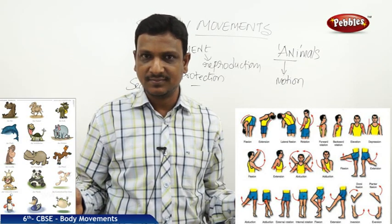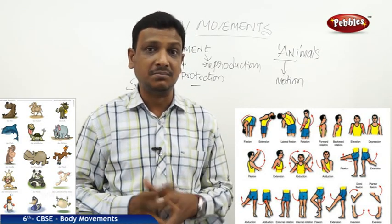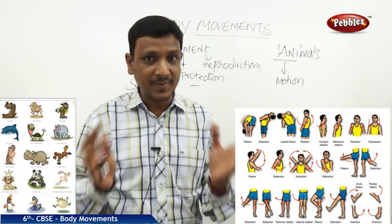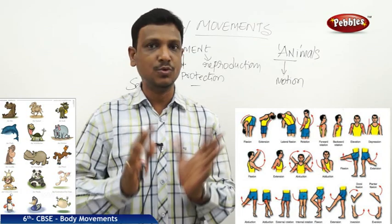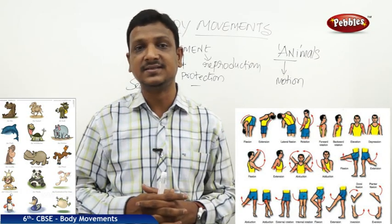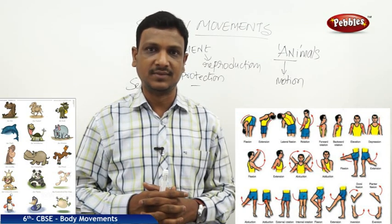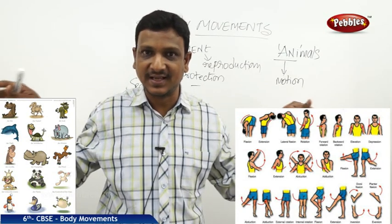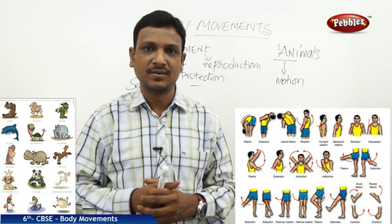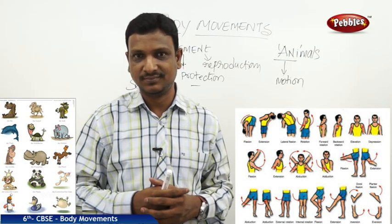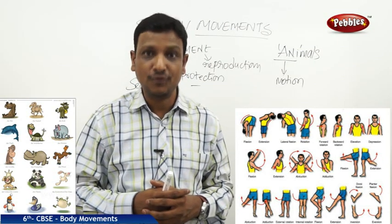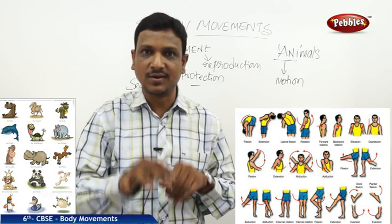All animals move from place to place by different means of movement. Movement is common in all organisms, but what kind of movement it is, is different. You are not flying in the sky as a human being — you walk with your two legs. Whereas a dog, cat, cow, or buffalo has four legs and walks on all four.